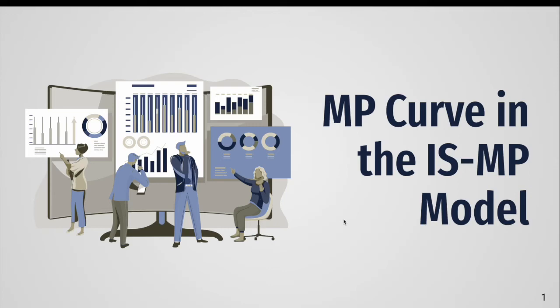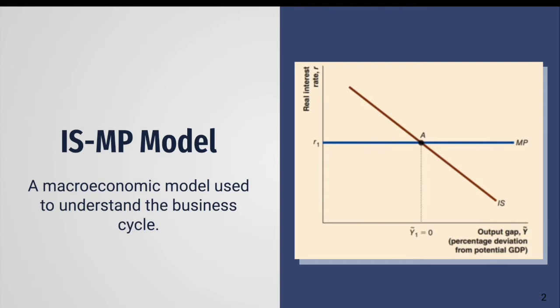For today we'll talk about the MP curve and the ISMP model. The ISMP model is a macroeconomic model used to understand the business cycle — in other words, why real GDP changes in the short run. It consists of the IS, MP, and Phillips curve. For this video, however, we'll be focusing on the MP curve.